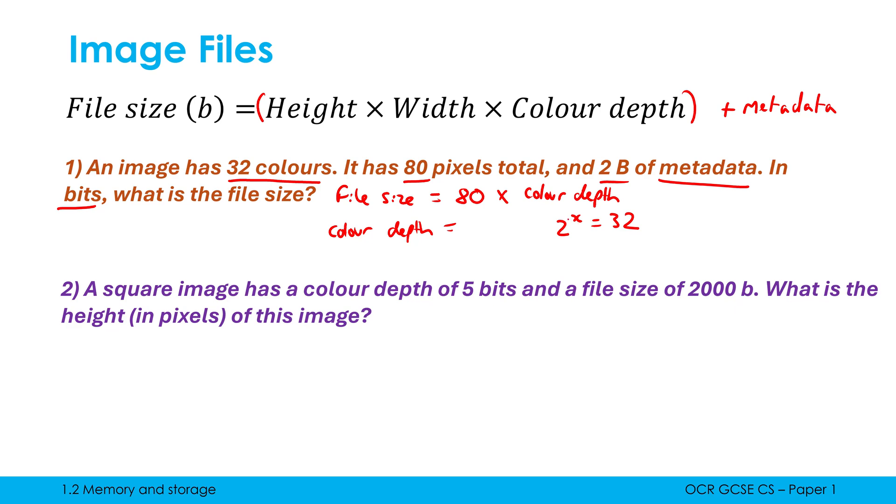So to work out the color depth, you need to do 2 to the power something is equal to 32. So what is that value, which is going to make it equal to 32? Well, you might have learned this by this point, just the binary powers. This is 5 bits, because x would be 5 in that case. 2 to the power of 5 is 32. If you haven't learned that yet, you could just be doing that sort of manually. 2 to the power of 1 is 2. 2 to the power of 2 is 4. 2 to the power of 3 is 8. 2 to the power of 4 is 16. Therefore, 2 to the power of 5 is 32. Therefore, the power is 5. Therefore, our color depth is 5.